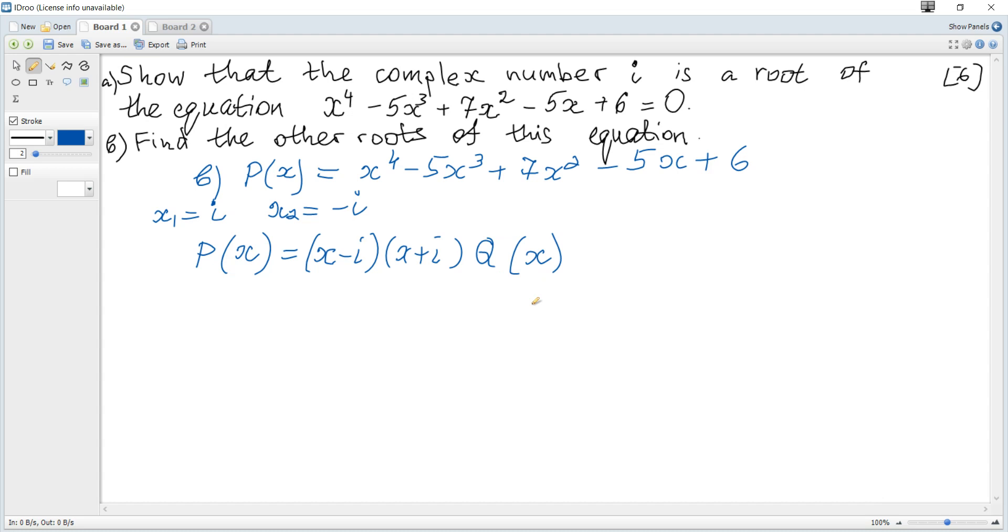We can write the general form of a polynomial of degree 2 as ax² + bx + c. We need this quadratic polynomial, and to find the other two roots, we just equate it to zero. How to find this quadratic polynomial?